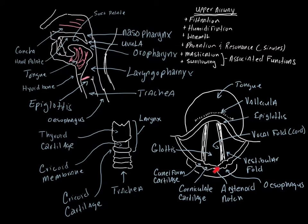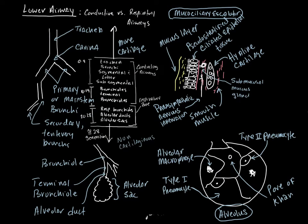There's a little notch separating the right from left side known as the arytenoid notch. The corniculate cartilage is lateral to that, and the cuneiform cartilage is even further lateral. Moving on, the lower airway consists of two major types of airways — conducting airways and respiratory airways — and this extends to the upper airway as well.